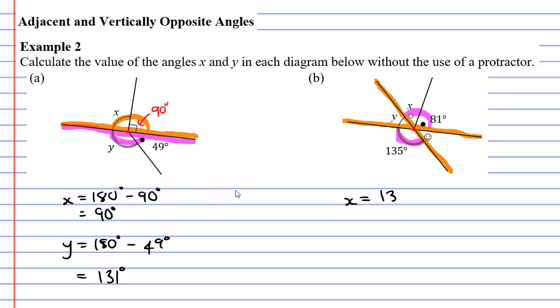We can find X by calculating 135 minus 81. What do we get when we do that? We get 54 degrees.